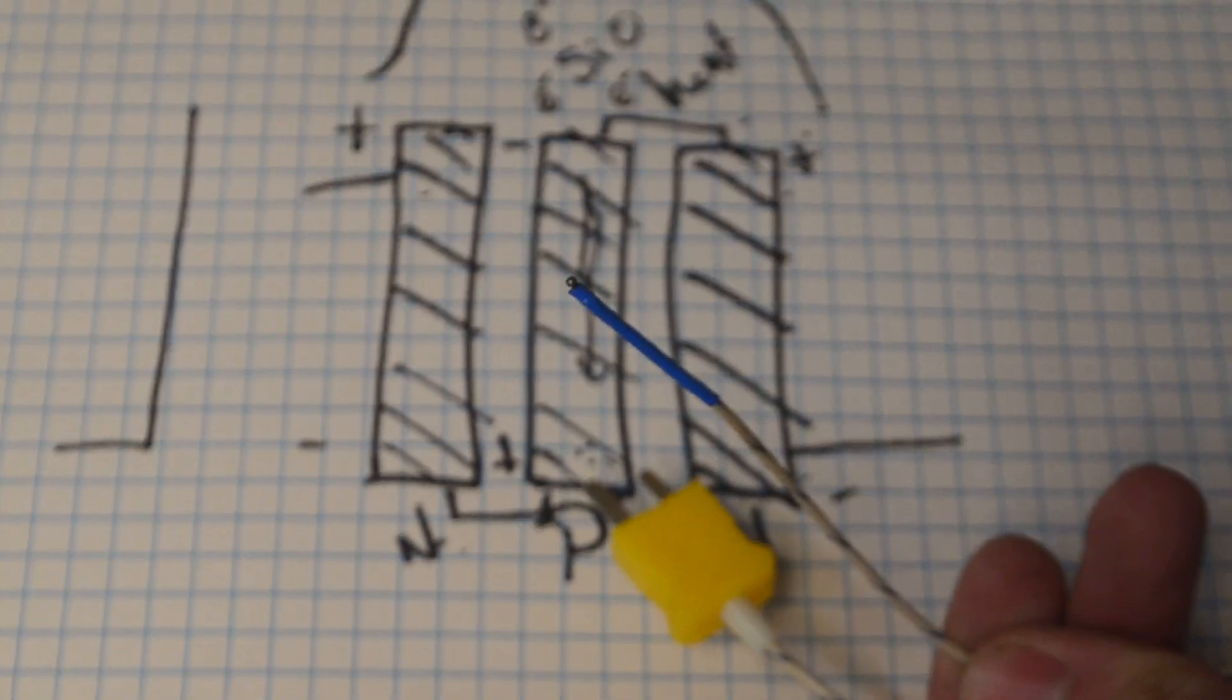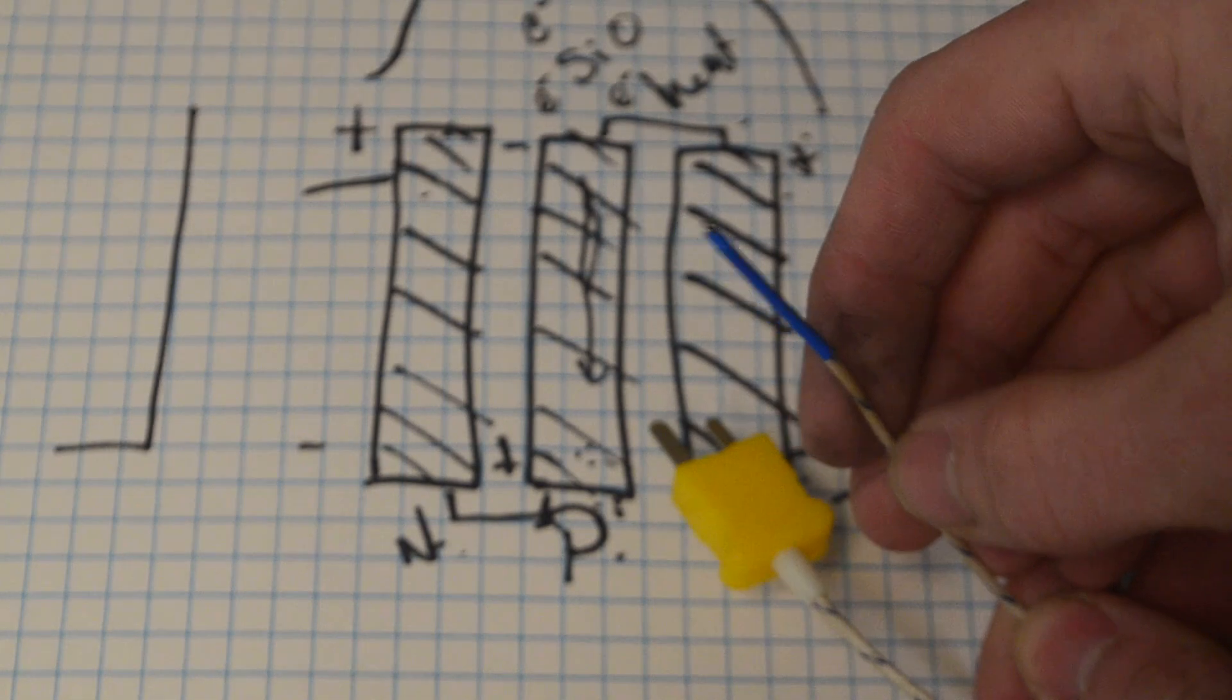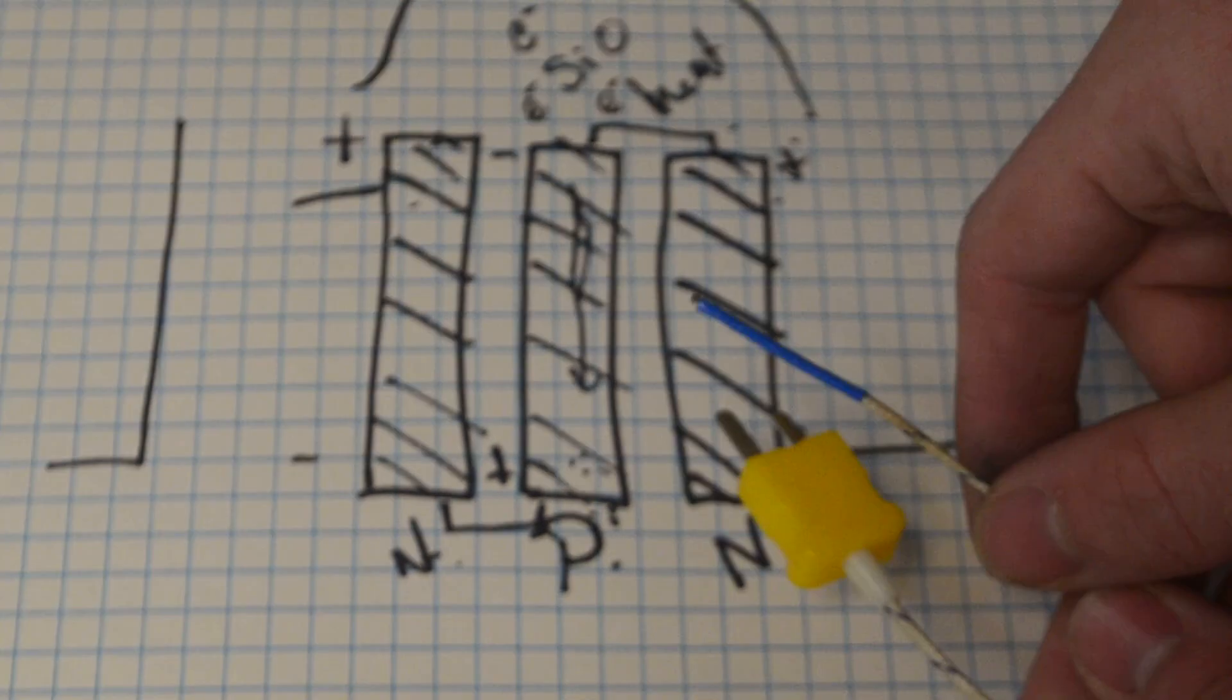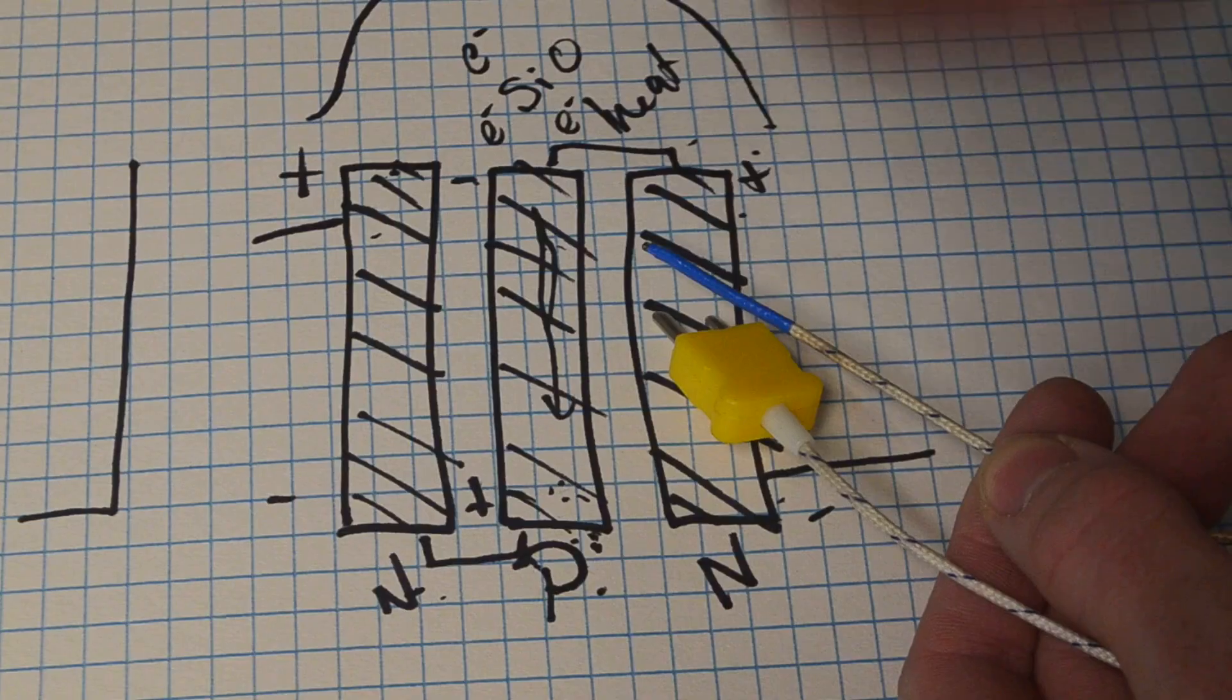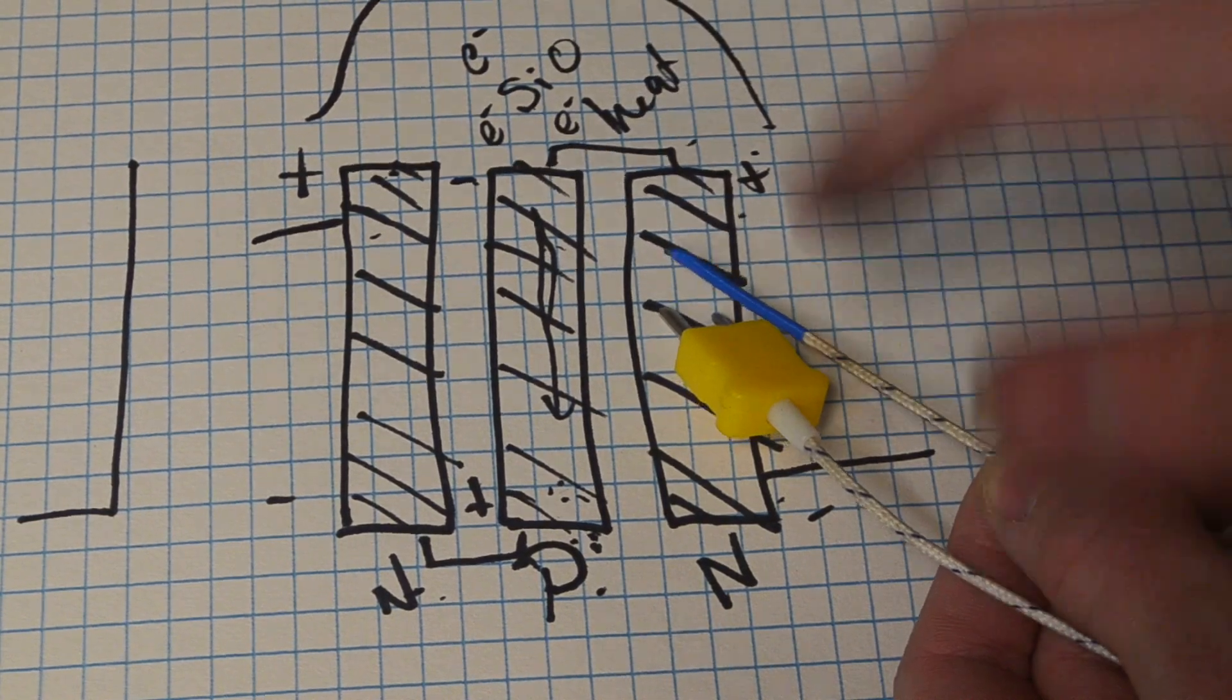One application of the thermoelectric effect can be found inside this. This is a little thermometer attachment that you can add to a multimeter. Basically what it does is that due to the heat differential, it creates a voltage. And based off that voltage, it can tell what temperature it is.